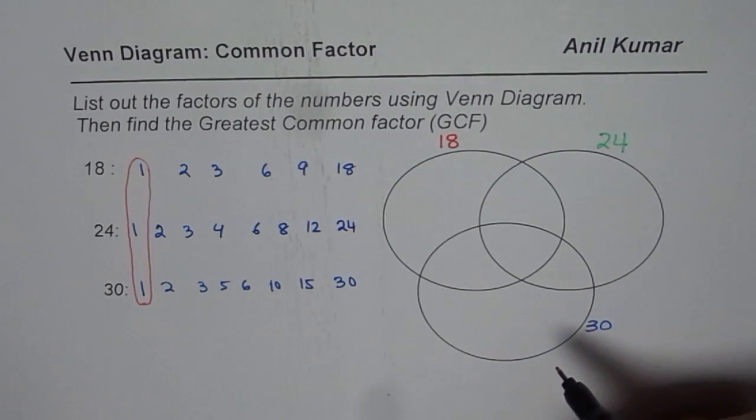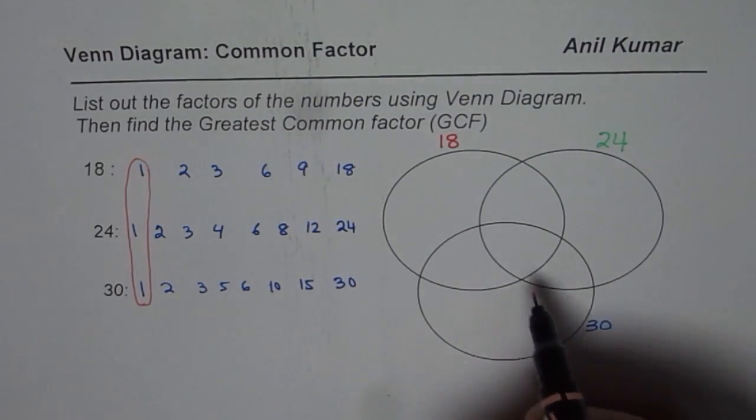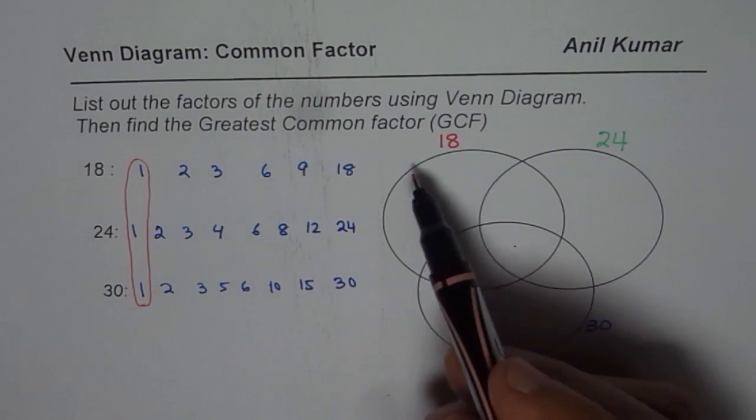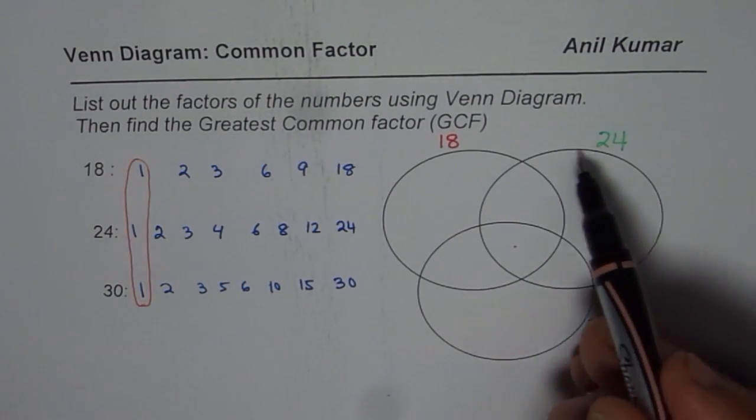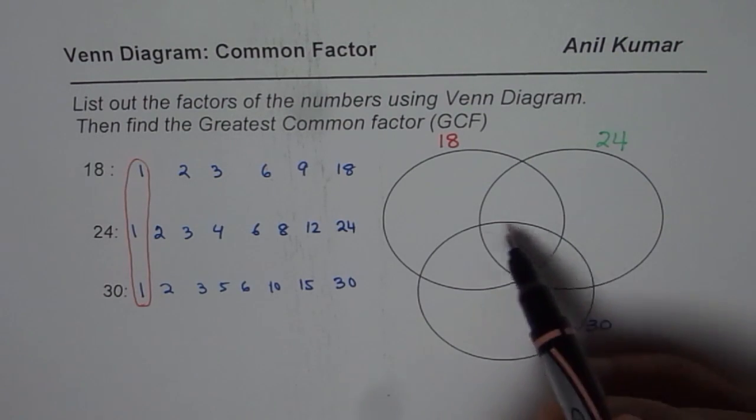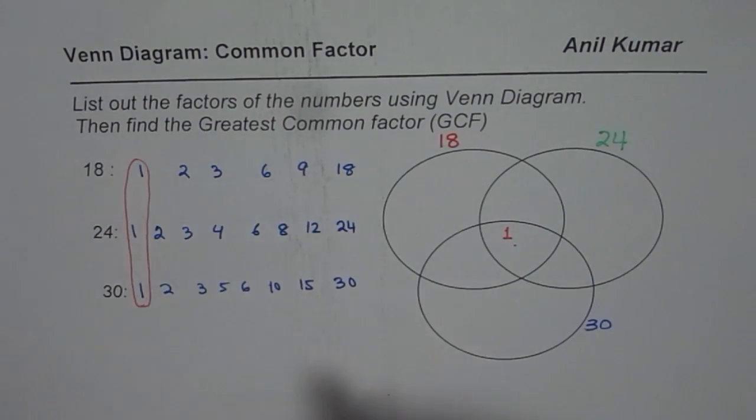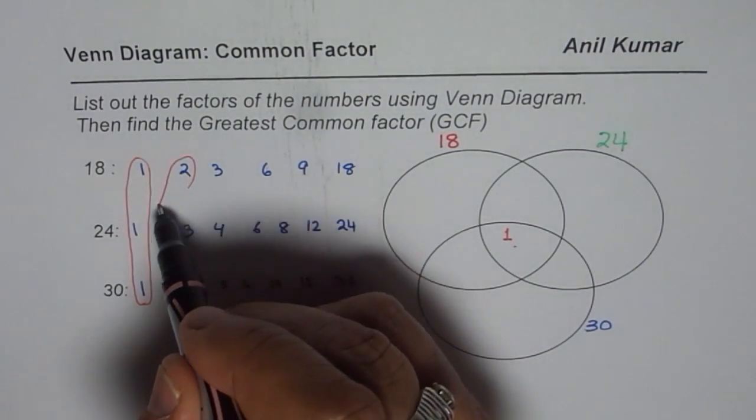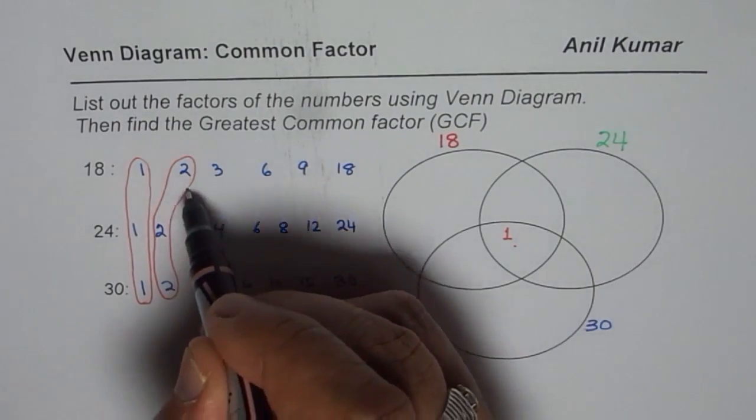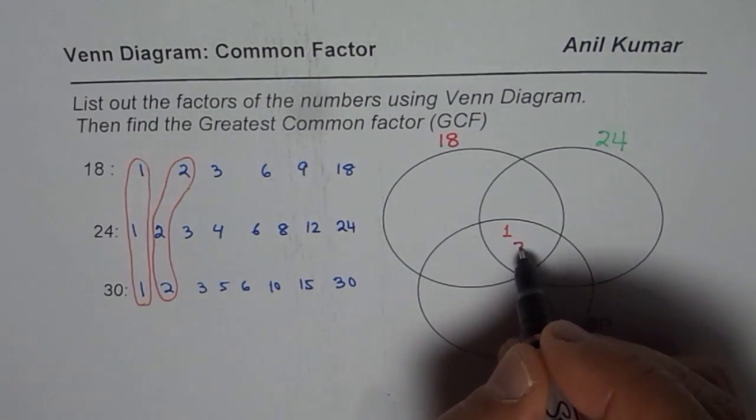And of course 1 is always such a factor. So where should that go? Now if you see, this part is common to all. It is common to 18, 24, and 30. So 1 will come here. Now which are other numbers? 2 is also common. Do you see that? So 2 will also come here.